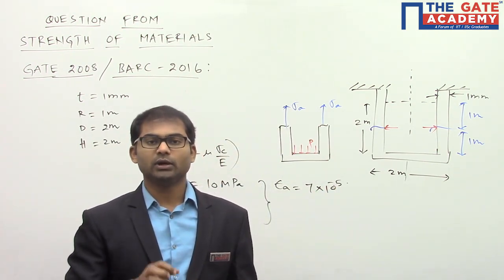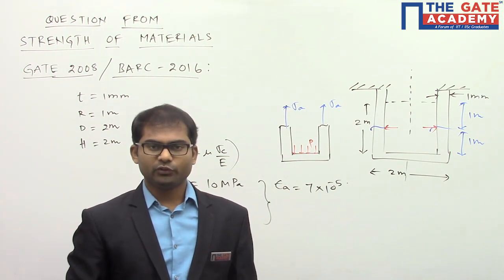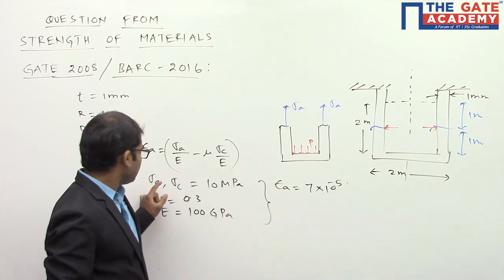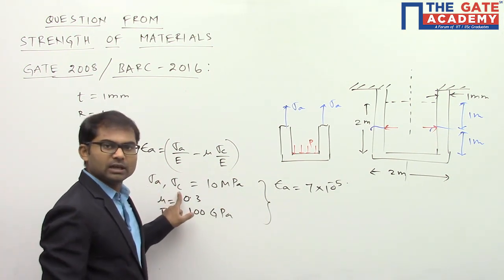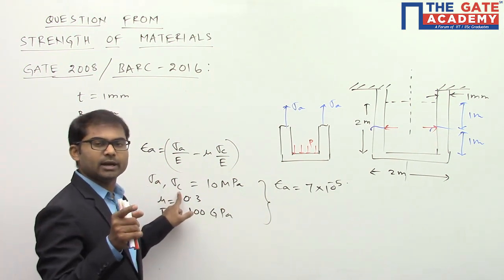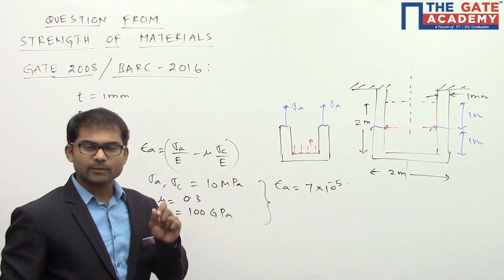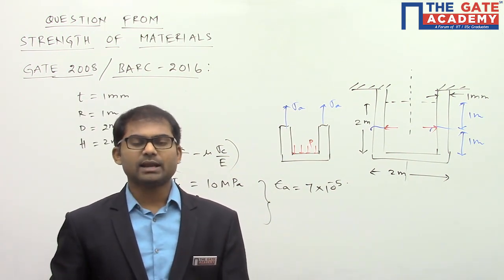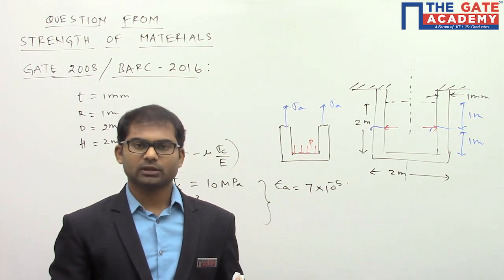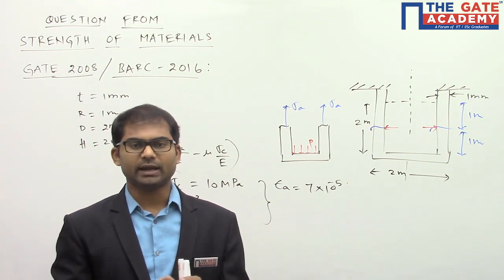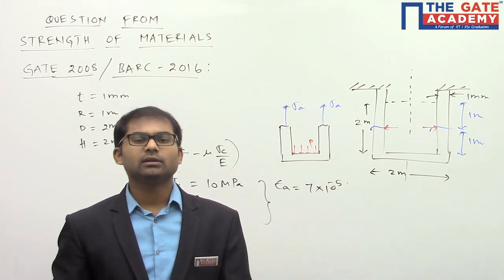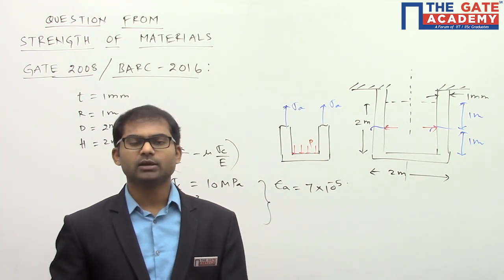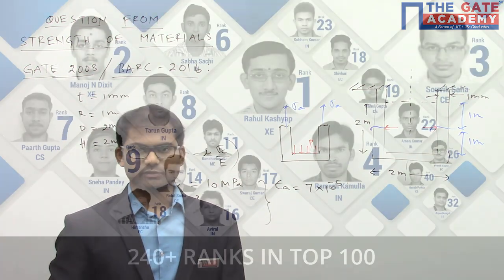Substituting these values gives the axial strain as 7 × 10⁻⁵. If you had incorrectly calculated σa as 5 MPa and σc as 10 MPa, you would end up with option A — which is absolutely wrong. By this video, I hope everyone has a clear idea of how to solve this question correctly. We'll come back with another video on other GATE questions. Thank you.